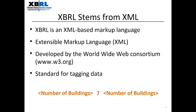XBRL is a technology standard already being used for public company financial statement reporting. XBRL is based on XML, a markup language developed by the World Wide Web Consortium. XML is a well-known standard for tagging or defining pieces of data. As an example, the number seven by itself is meaningless, but by using XML we can tell a computer that seven represents the number of buildings. Using tags helps the creator of information communicate to the user exactly what each data point represents, so the end user can take that data and process it.